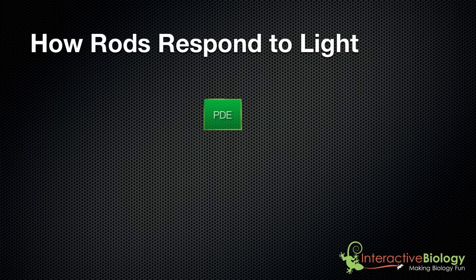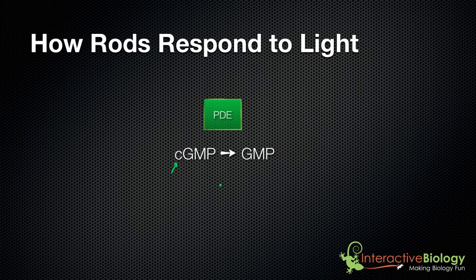Now we have this phosphodiesterase by itself. There are a lot of complicated details here, but if you keep in mind that this was our goal, it should make sense. So now we have this PDE — this phosphodiesterase — and it can go and do what it does. What does it do? It converts cyclic GMP into GMP, changing the molecule from a cyclic form to just GMP. This is the step that leads to vision — this is how we're able to detect light.